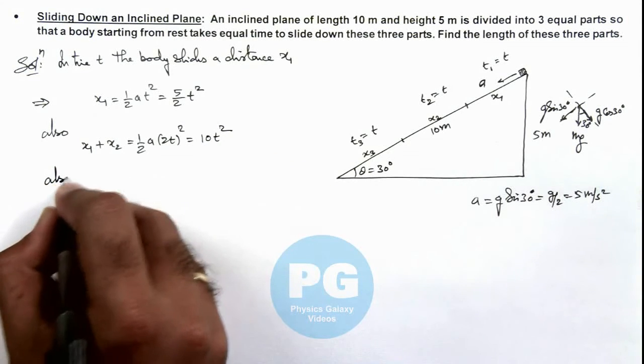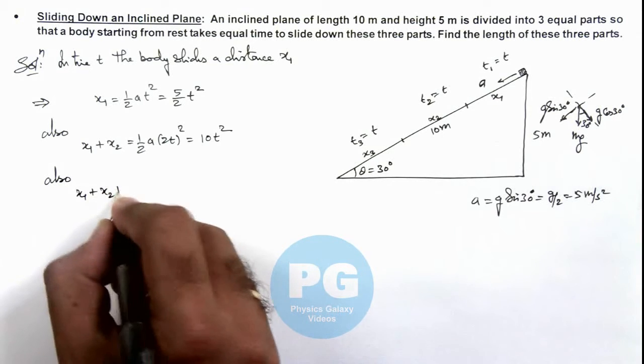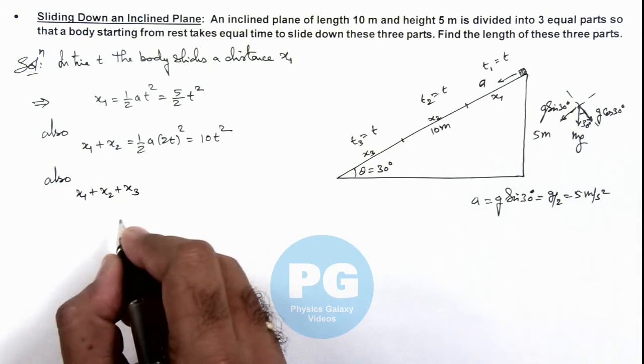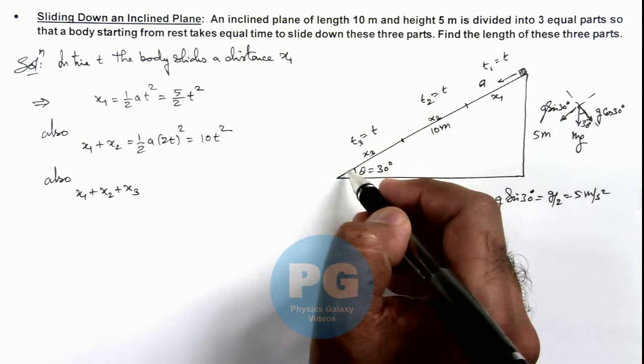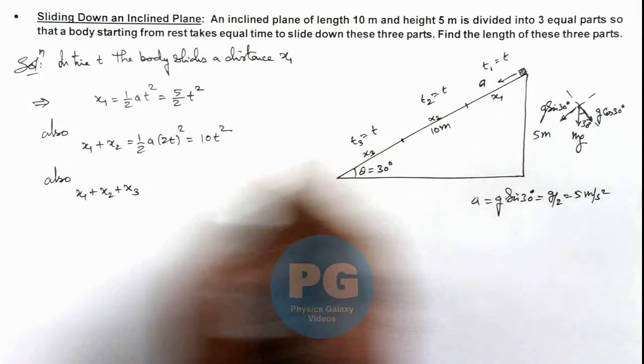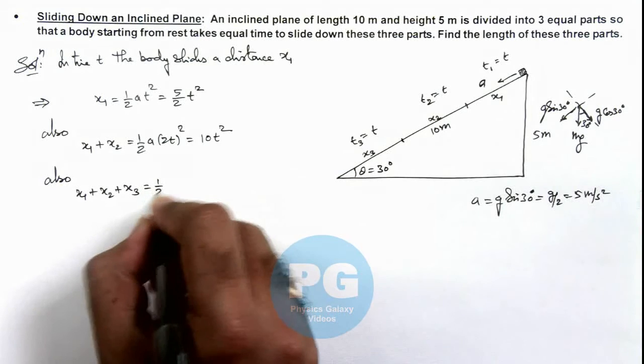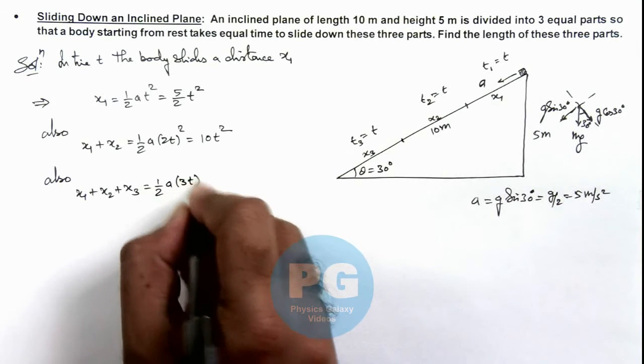And once again we can use x1 plus x2 plus x3, which is the total distance traveled by the particle along the incline in time 3t. So here I can write half a_y multiplied by 3t squared.